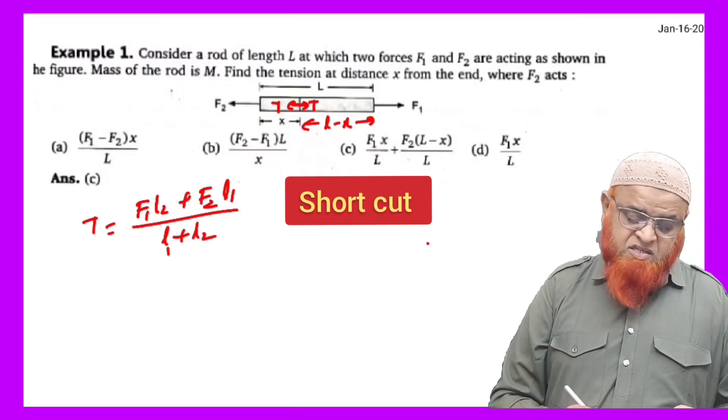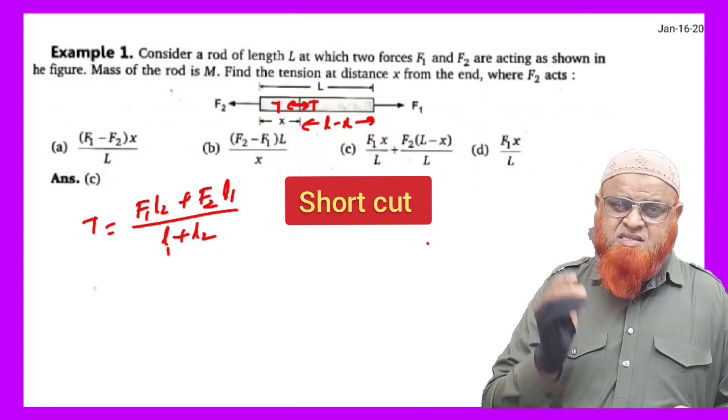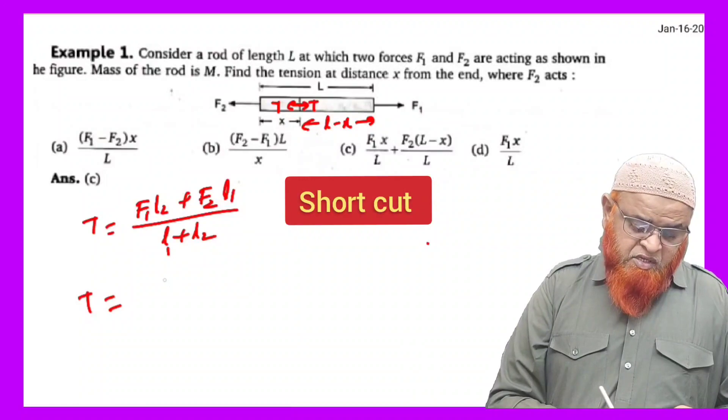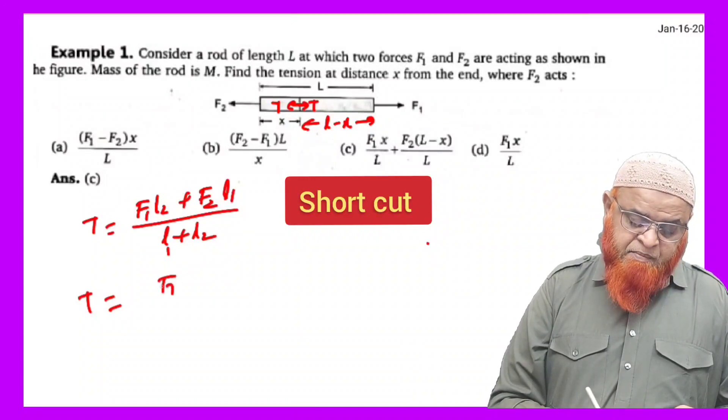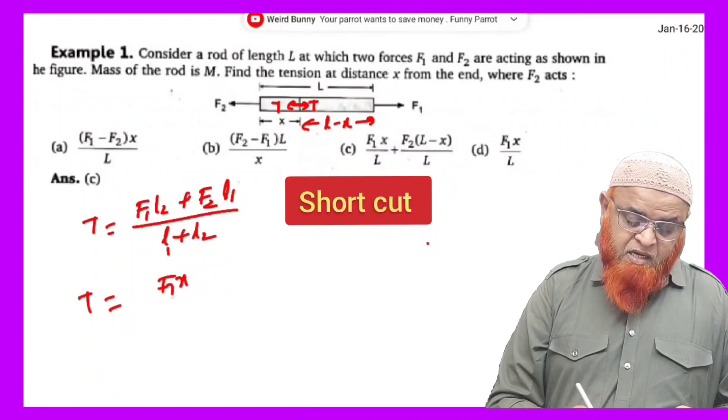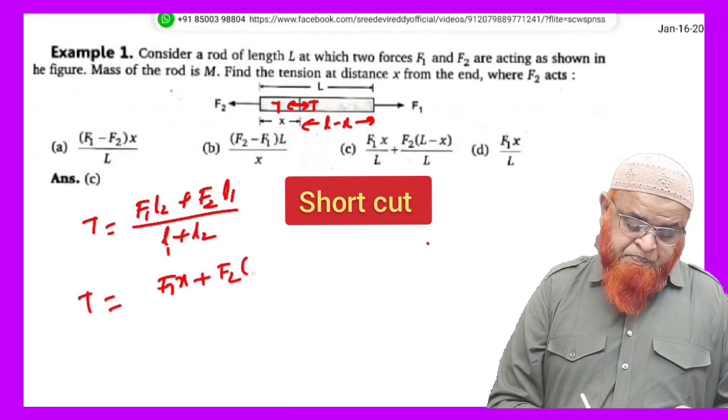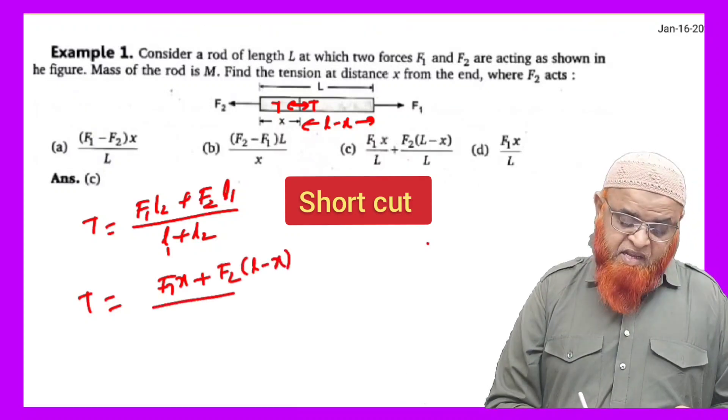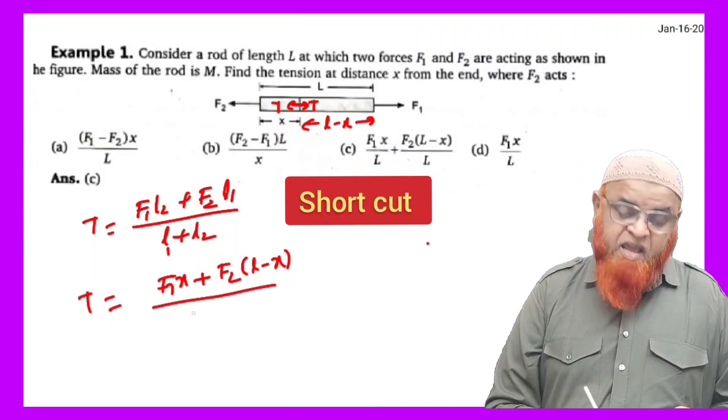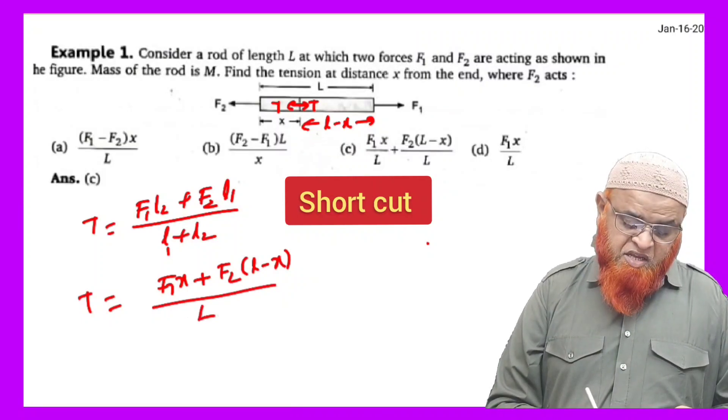L1 plus L2, that's it. Record the answer, the simple shortcut method. So tension T is equal to F1 and you can take L2 as X, plus F2 and L1 is taken as L minus X, whole divided by L1 plus L2 which is nothing but capital L.